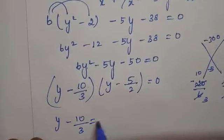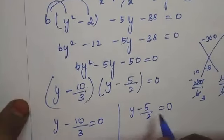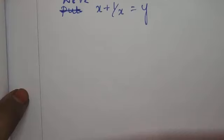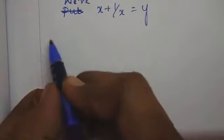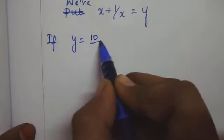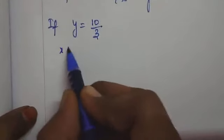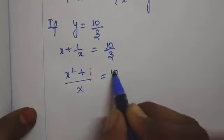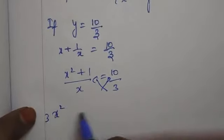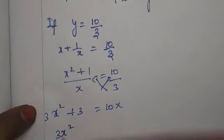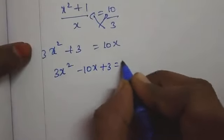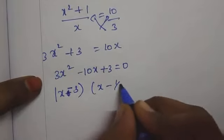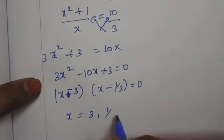From y - 10/3 = 0, y = 10/3. Substituting back into x + 1/x = 10/3: taking LCM gives (x² + 1)/x = 10/3, and cross-multiplying gives 3x² + 3 = 10x, so 3x² - 10x + 3 = 0. Factoring: (x - 3)(x - 1/3) = 0, giving x = 3 or x = 1/3.